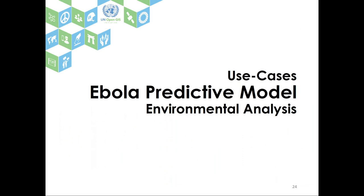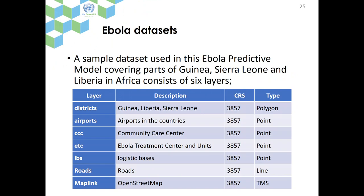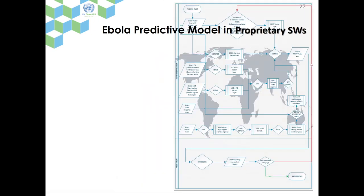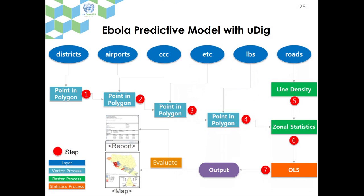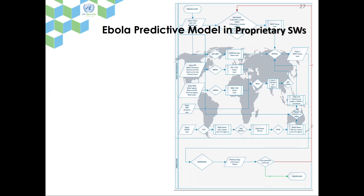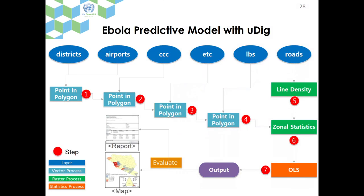For the Ebola use case, we applied this development to the Ebola scenario. The dataset used includes: districts, airports, community care centers, and others, displayed on UDIG software. For the predictive model, we received the model from experts in that domain. It was originally designed for proprietary software, so we converted it to a UDIG version. The process includes: district point-in-polygon operation with airport data to generate results, proceeding through operators step by step.